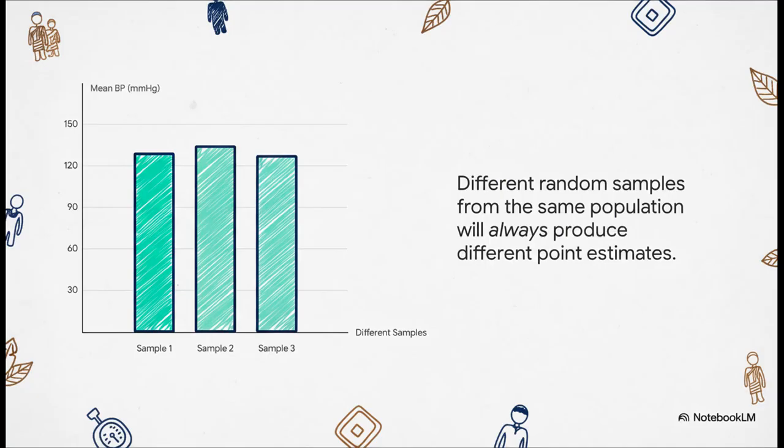Here's where it gets tricky. What if another team does the exact same thing, just with a different random sample of people? They get 135 millimeters mercury. And a third team, they get 128. This is just the nature of sampling. It's called sampling variability. Every time you dip into the population, you're going to get a slightly different result. Which one is right? 130, 135, 128? A single point estimate just can't answer that question.